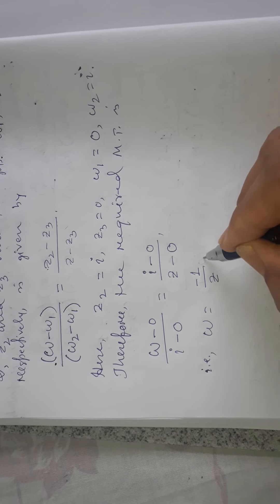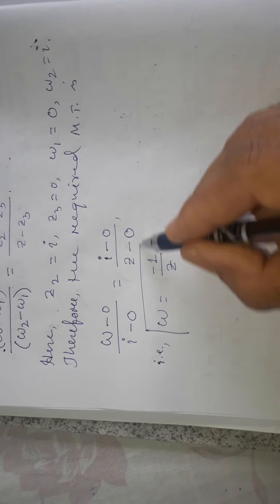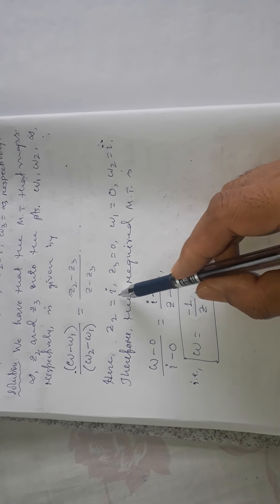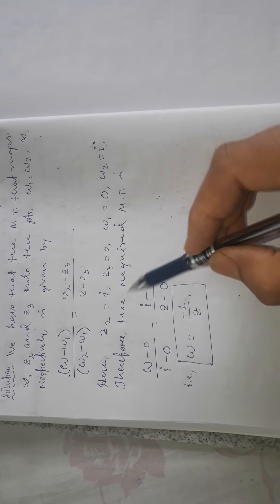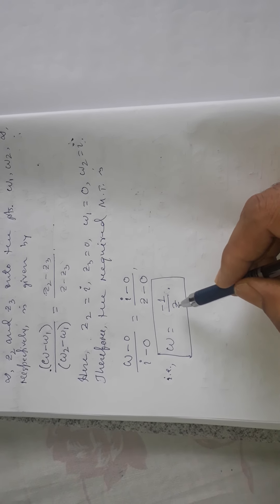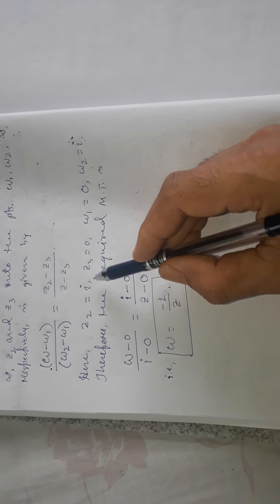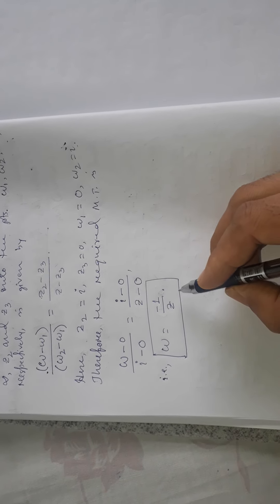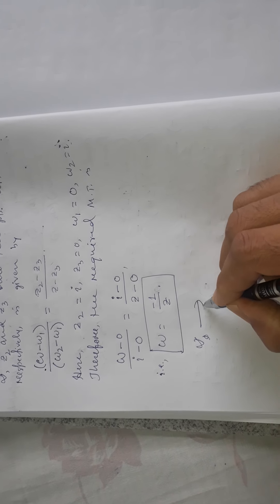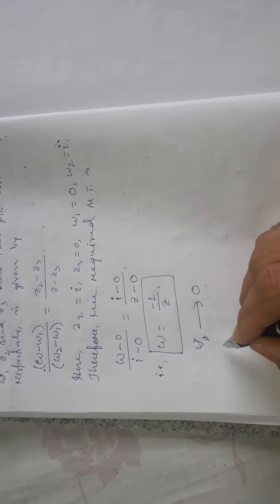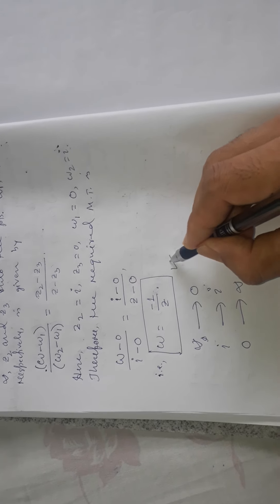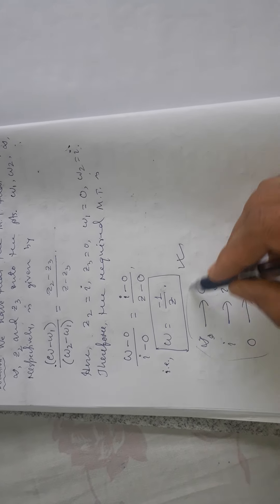Solving this gives W = -1/Z. You can verify: ∞ maps to W = 0, i maps to W = -1/i = i, and 0 maps to W = ∞. So the infinity point is mapped to 0, i is mapped to i, and 0 is mapped to the point at infinity. This is the required transformation, and after finding it you can just verify it.